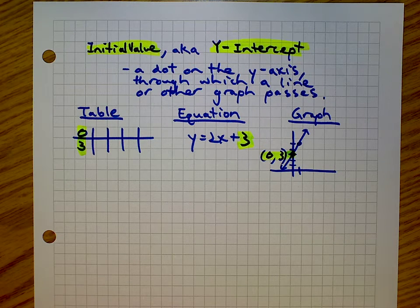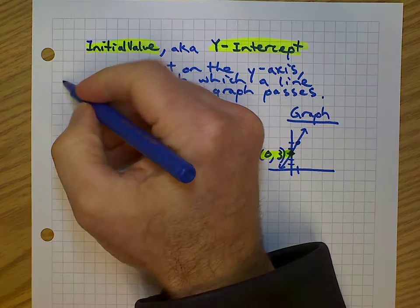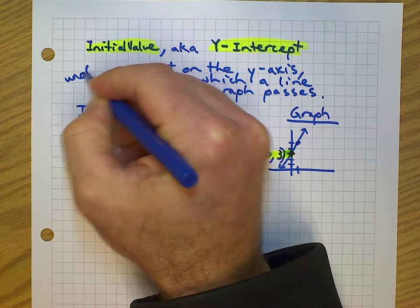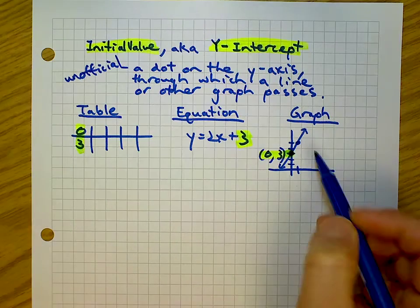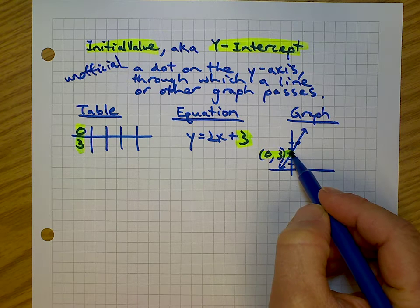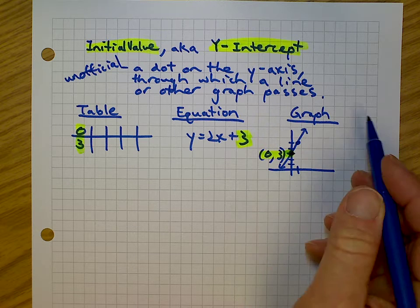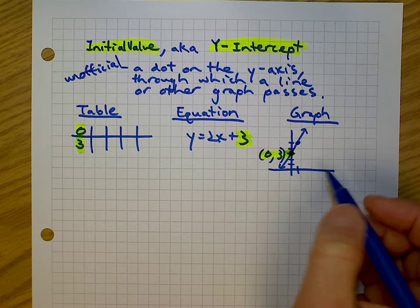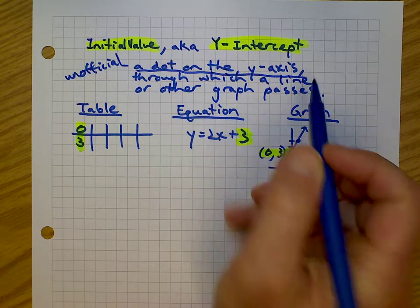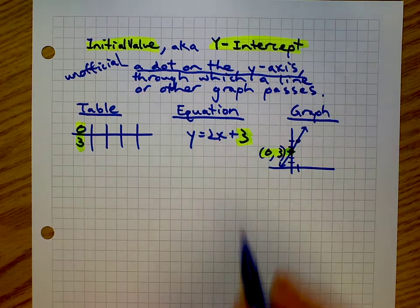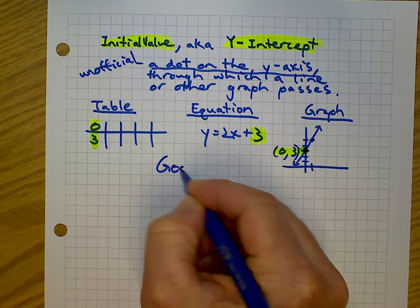The unofficial definition — it's practical — is: it's a dot on the y-axis through which a line or other graph passes. The bottom line is it's a dot on the y-axis, which looks like the constant in an equation, and appears as a point on a table. Are we good?